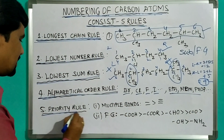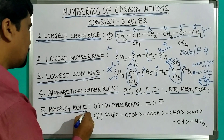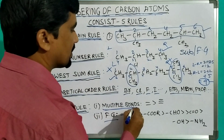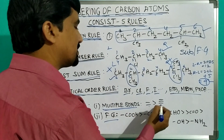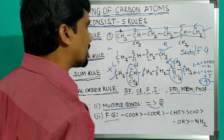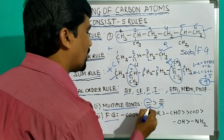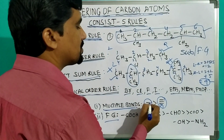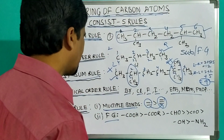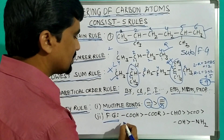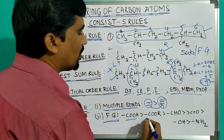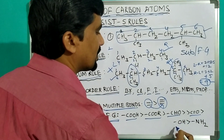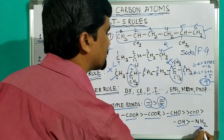The fifth and last rule is the priority rule. We must see the priority rule in multiple bonds and functional groups. In multiple bonds, the double bond has higher priority than the triple bond, so the lowest number must be given to the double bond first, then the triple bond. In functional groups, the priority order is: -COOH > -COOR > -CHO > C=O > -OH > -NH2.